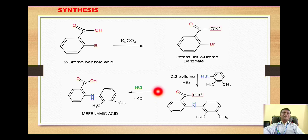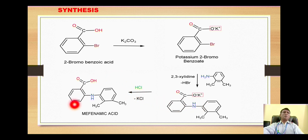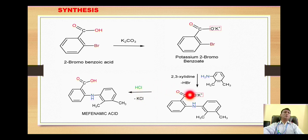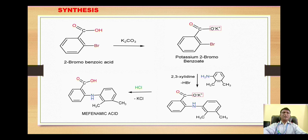In the next step, this potassium salt is reacted with HCl, simply to remove the potassium and convert the potassium salt into its corresponding acidic form. When HCl reacts with the potassium salt, the Cl reacts with potassium to form KCl which is removed, and the hydrogen goes onto the oxygen to form the corresponding hydroxyl group. With this we get the formation of our final compound, mefenamic acid. Thanks for watching the video, please like it, share it, and don't forget to subscribe.